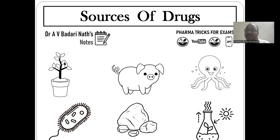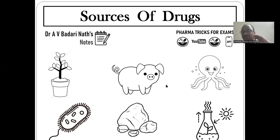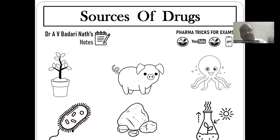Plants are very excellent — good sources are there. Animals are also a good source; for example, a good source of insulin. And sea animals — this is marine pharmacognosy, a very important topic. Sea is full of animals, sea is full of plants. And microorganisms — we are preparing antibiotics naturally from microorganisms. We are not going to modify them here. Semi-synthetics is another part. Naturally, we are extracting.